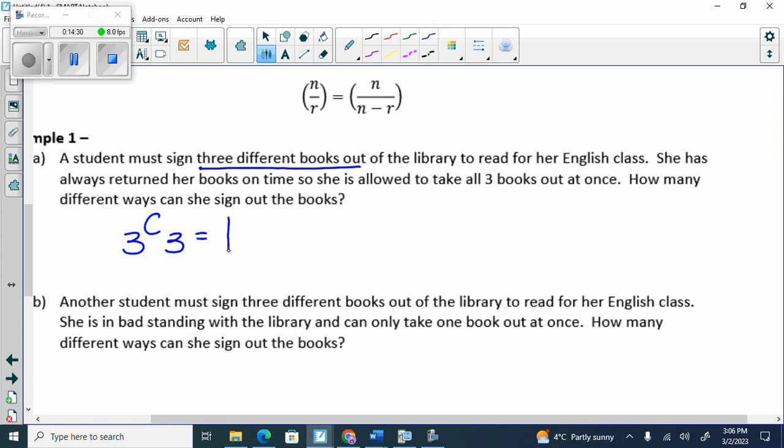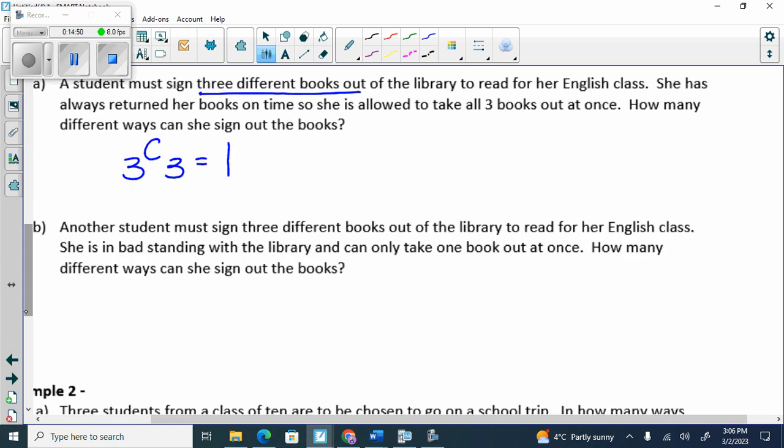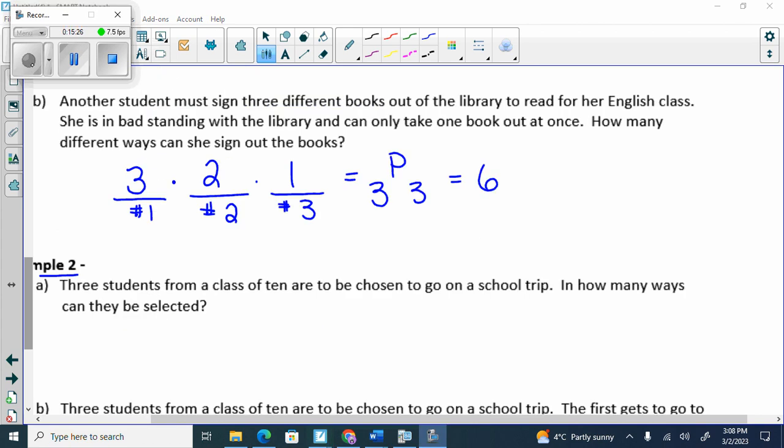Now here we have the infamous student who's not in good standing. Another student must sign three different books out of the library to read for her English class. She is in bad standing with the library and can only take one book out at once. How many different ways can she sign out the books? So does the order matter? Yeah, it does, because you're going to sign out a different book each time, right? So I could do this. This is book signing one. This is the first time I go in, number one. Then I go in month number two or whatever this is, just out at once. And then the third time she goes in to take out a book. How many book options does she have for the first time she goes in? Three. She takes out a book. Is she going to take out the same book again? So then we would have two and then we would have one.